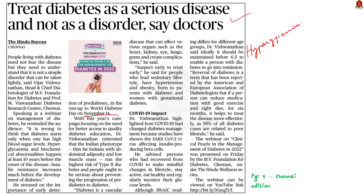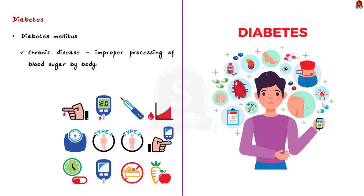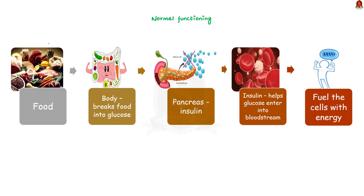In this context, let us understand diabetes in a prelims perspective. Diabetes mellitus, more commonly known as diabetes, is a disease that happens when the body can't process blood sugar, also known as glucose. When we eat, our body breaks food into glucose. The glucose is then sent into the bloodstream to fuel the cells in the body with energy. This triggers the pancreas to release a hormone called insulin, which helps glucose enter the cells.